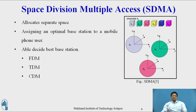An application of SDM involves assigning an optimal base station to a mobile phone user. A MAC algorithm can decide the base station by taking into account which frequency, which time slot, and which code are still available for the mobile station depending upon the technology.